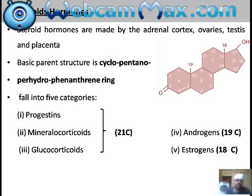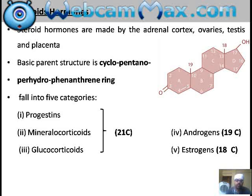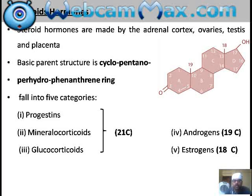Estrogens are 18-carbon compounds. So the basic parental structure is derived from the cyclopentanoperhydrophenanthrene ring. Classifying according to carbon atoms: progestins, mineralocorticoids, and glucocorticoids fall into 21-carbon steroids; androgens have 19 carbons; and estrogens have 18 carbons.